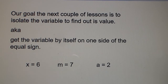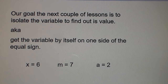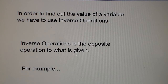Our goal the next couple of lessons is to isolate the variable — to find out its value. That means get the variable all by itself on one side of the equal sign, like x equals 6, x equals 7, and a equals 2. In order to find out the value of a variable, we have to use inverse operations.